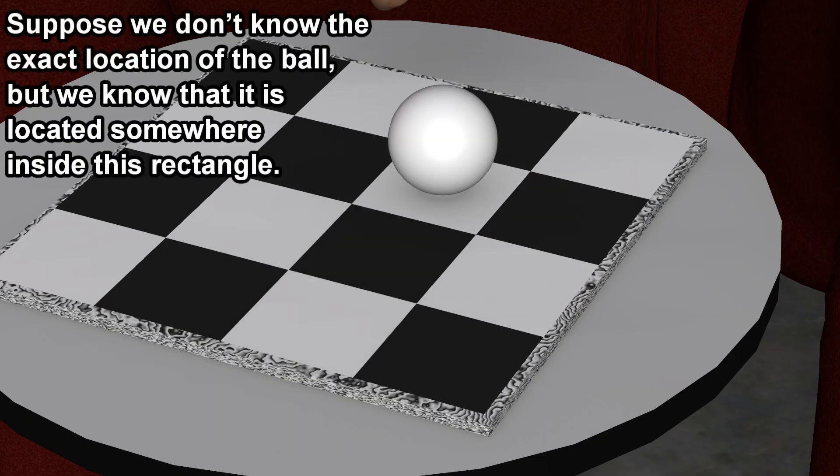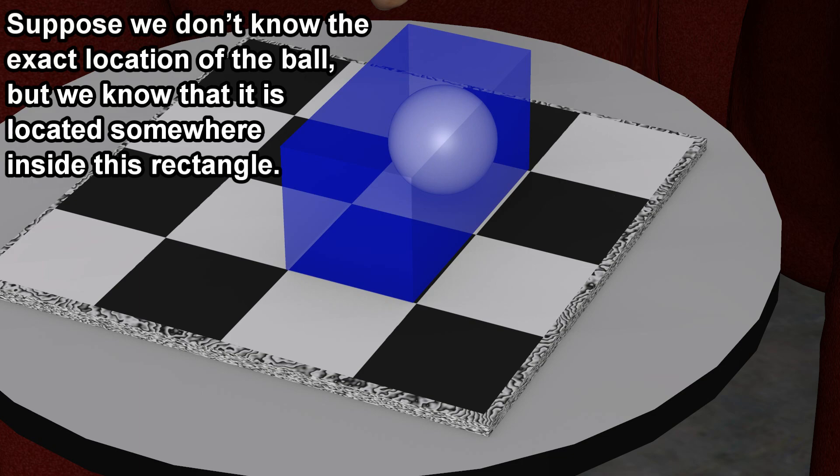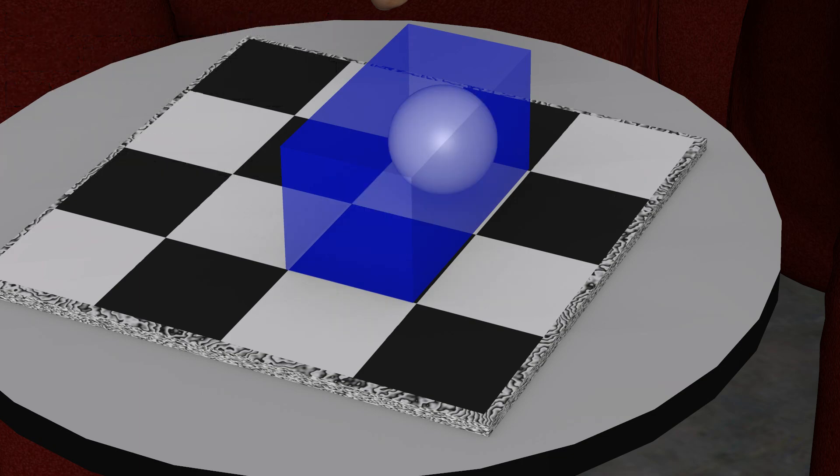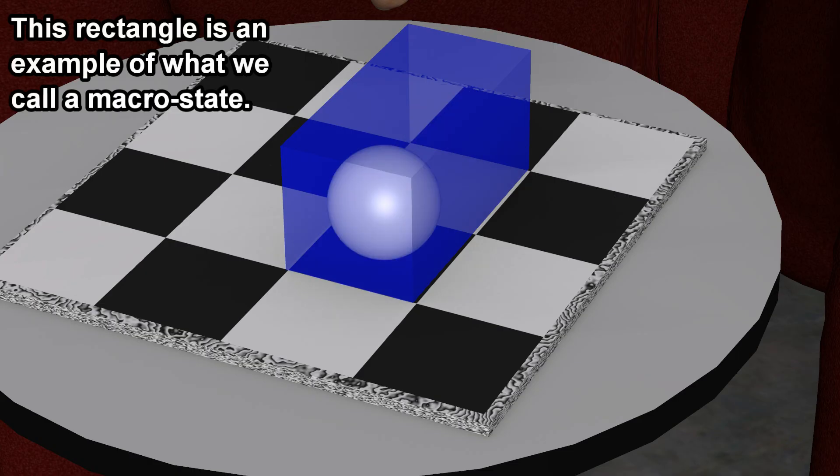Suppose we do not know the exact location of the ball, but we know that it is located somewhere inside this rectangle. This rectangle is an example of what we call a macrostate.